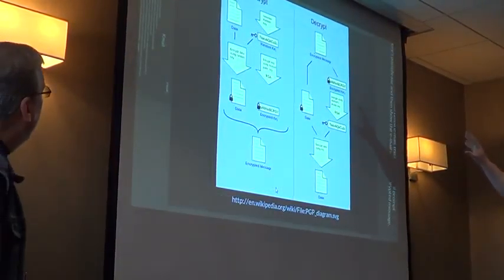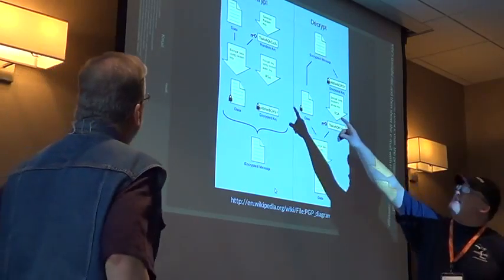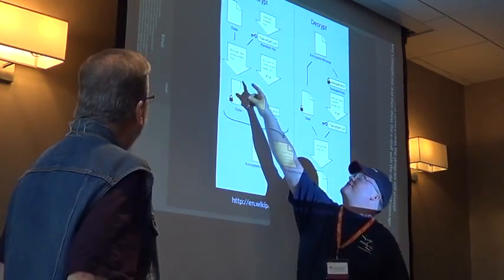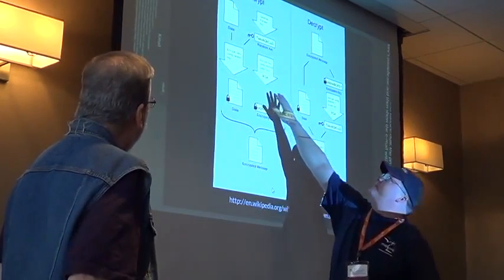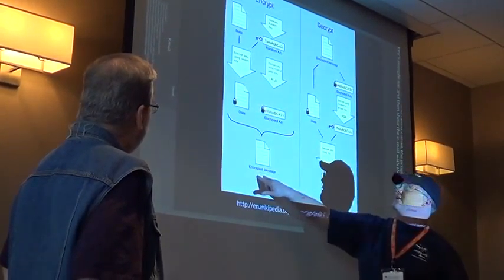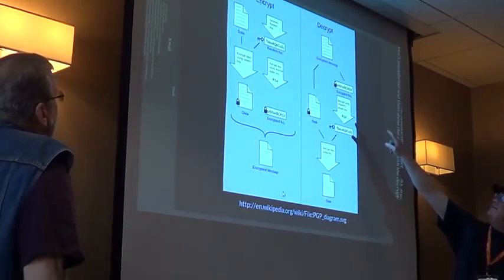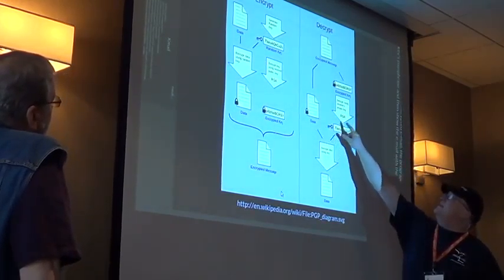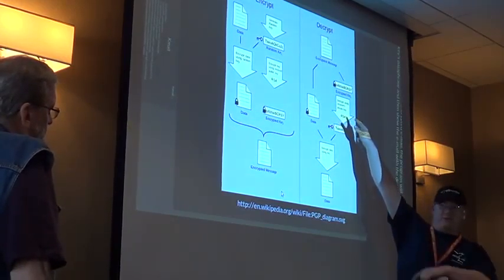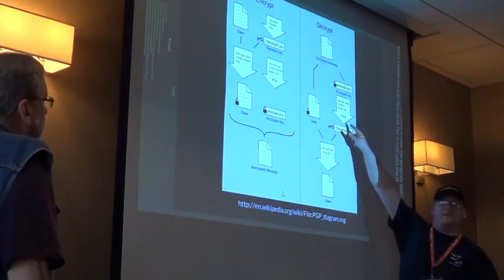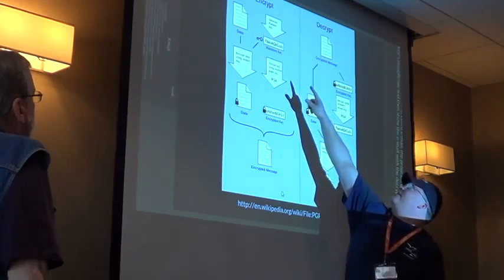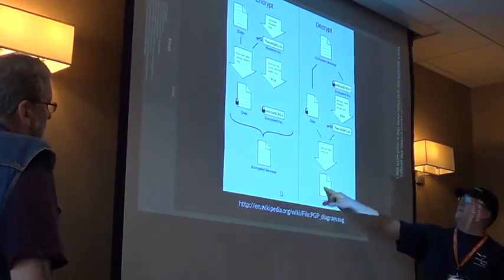Here's a picture of how it works. A random number is generated and encrypts the message. Then it takes the public key of the person you're sending to and encrypts that random key, putting it together in one message. When you go to decrypt it, the encrypted key can only be decrypted by the recipient's private key. Once you have that decrypted key, you can decrypt the message itself.